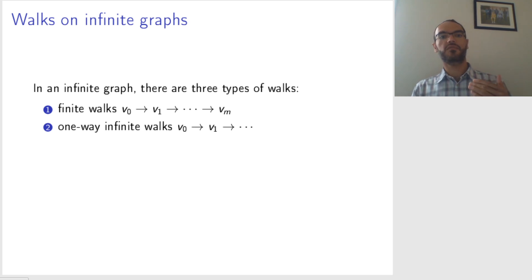We can have one-way infinite walks where somebody starts at a given point and then walks forever. And we can have a two-way infinite walk where somebody has been walking since forever and walks until forever.